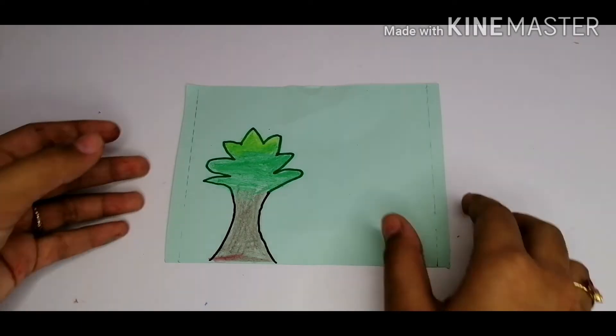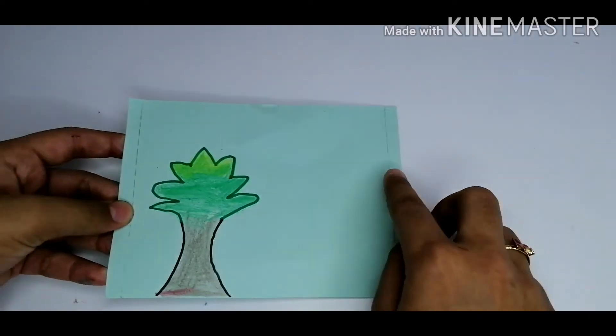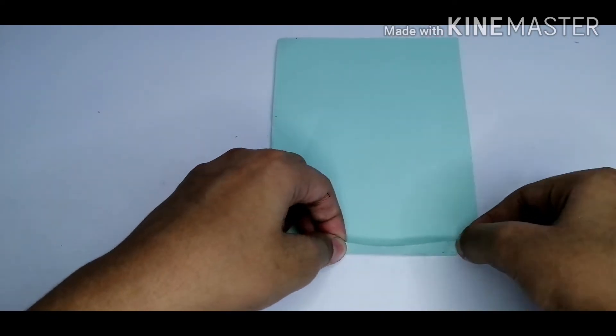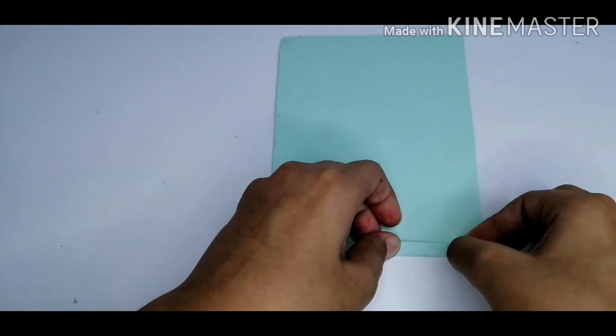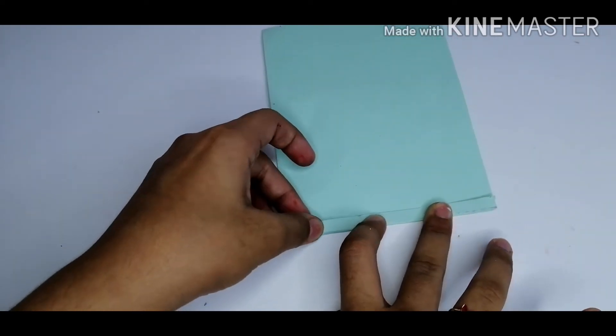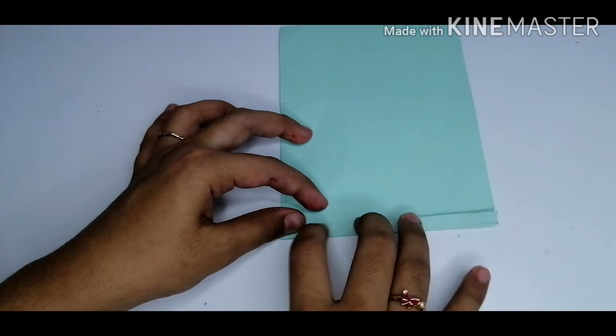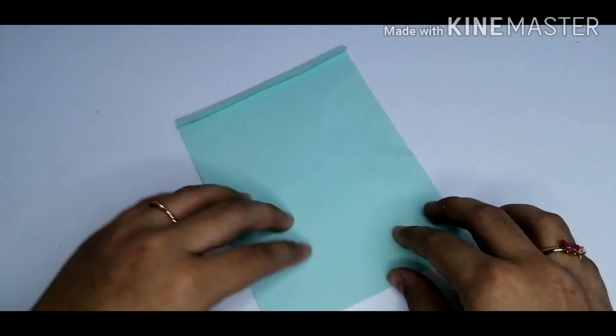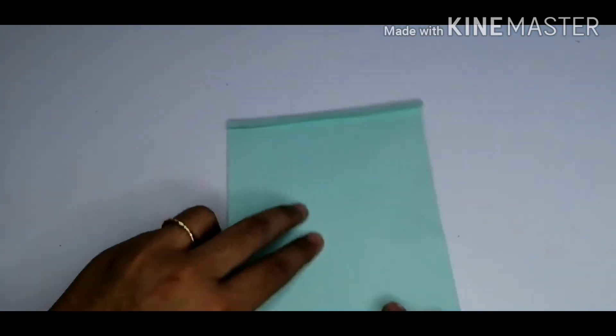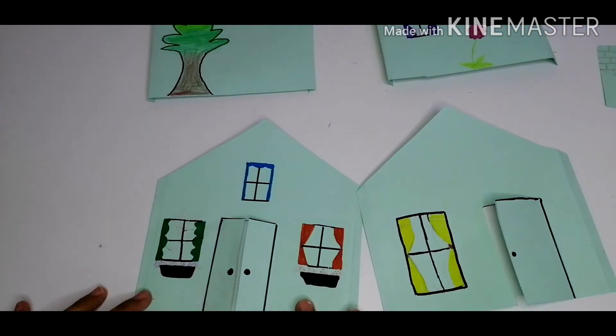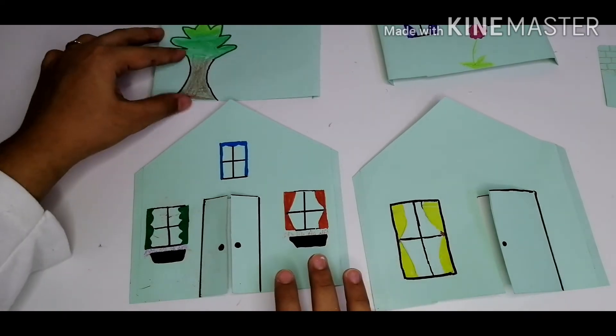Now we are going to fold these tabs on the opposite side. Fold these tabs, the opposite side of the house. We are going to repeat these tabs to every side of the house.